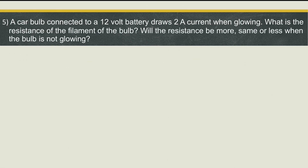Next question: a car bulb connected to a 12 volt battery draws 2 ampere current when glowing. What is the resistance of the filament of the bulb? Using R = V/I directly: V is 12 volt, current is 2 ampere, so the answer is 6 ohm. When the car bulb is connected to a 12 volt battery and draws 2 ampere, the resistance of the filament is 6 ohm.